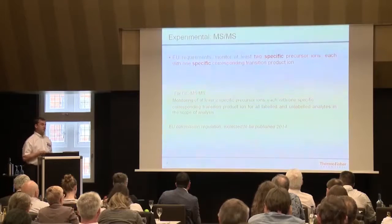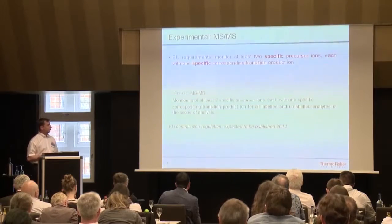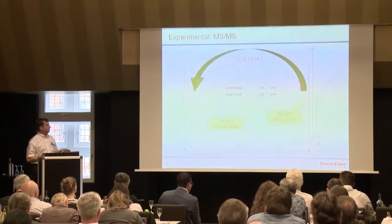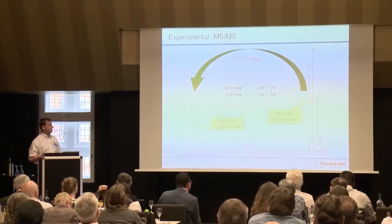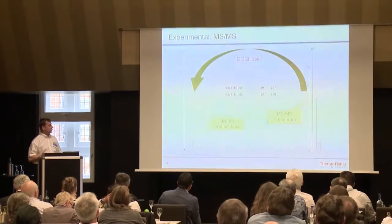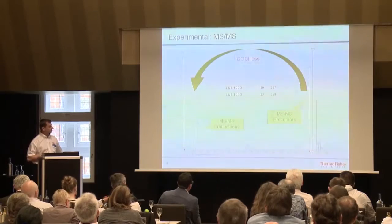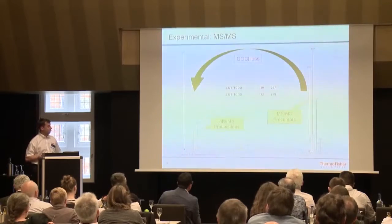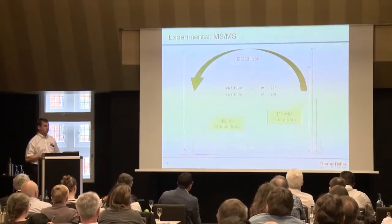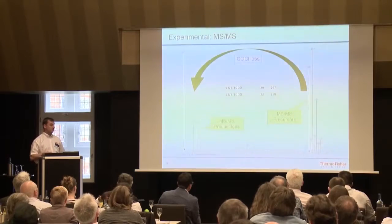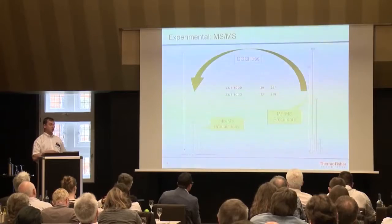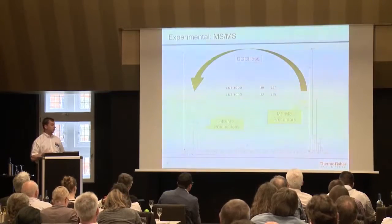Coming back to the way we have to select transitions for dioxins, it's pretty straightforward for chlorinated dioxins to select transitions according to the new criteria. For example, in this daughter ion spectrum, you can see for 2,3,7,8-DCDD it's quite easy to go from 320 to 257, and from 322 to 259. You run a solvent injection, decide which one gives more intensity, and then decide which will be the quantitation ion and confirmation ion.